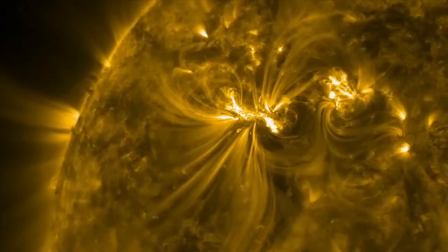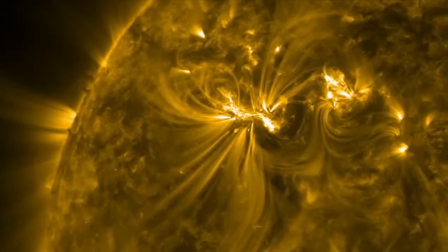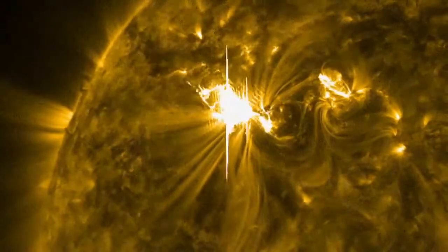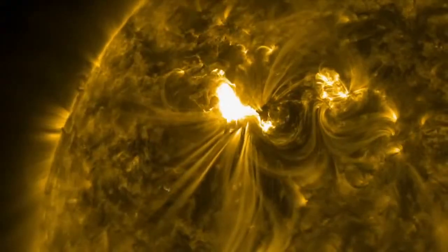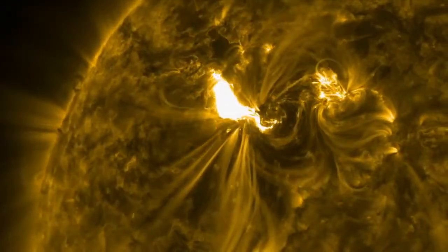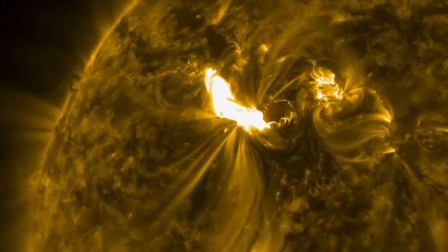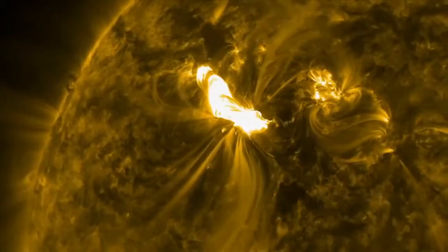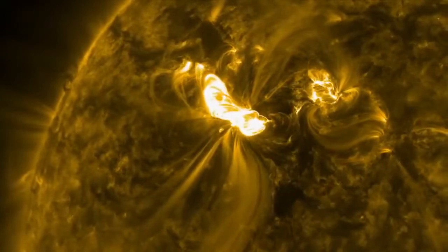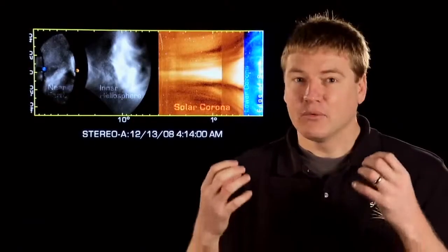A solar flare is a huge release of energy that converts the magnetic energy of the Sun into heat, into light. It accelerates particles and can really heat up the plasma in a matter of minutes to over 60 million Kelvin.